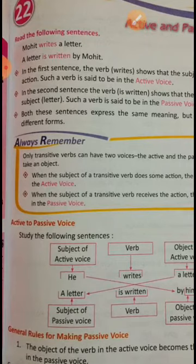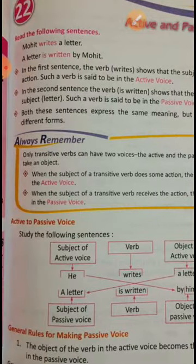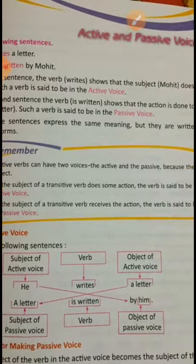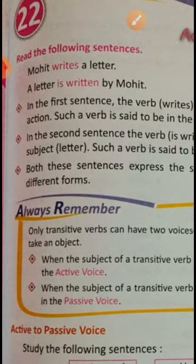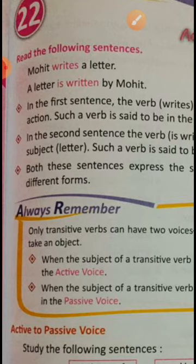In the second sentence, 'is written' shows that the action is done to the subject — the letter — so this is passive voice. This is how we categorize active and passive voice. When we change the sentence, 'a letter' moves to the subject position. In simple present tense, we add is/are/am according to the subject.